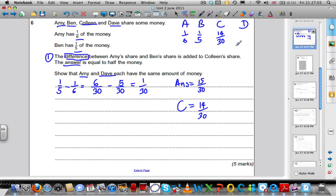What does that leave Dave with? Ben had 1 5th, which was the same as 6 out of 30. Amy had a 6th, which was the same as 5 out of 30. Colleen had 14 out of 30. So adding those together, we get 25 out of 30.